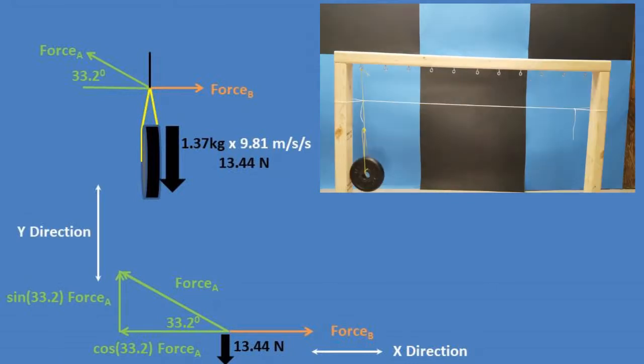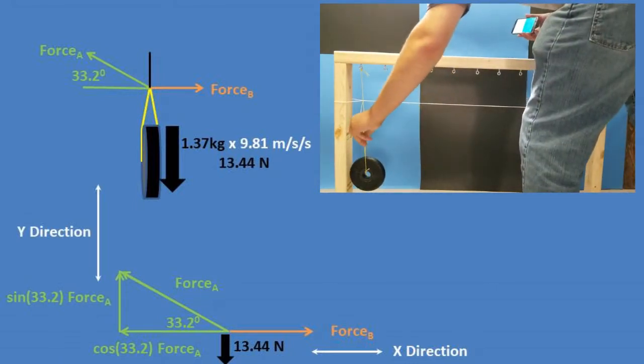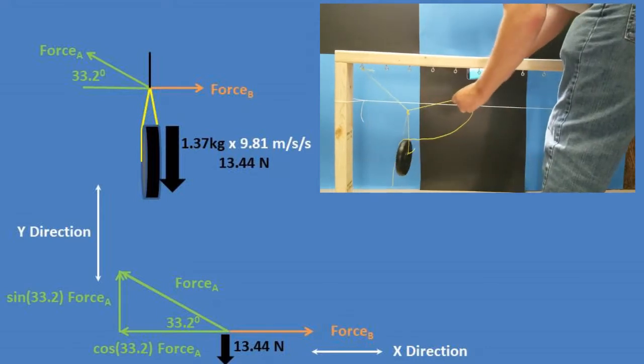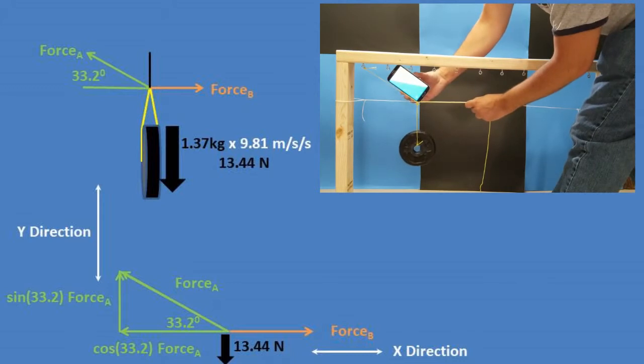Now, we will once again use trigonometry to solve for the vector in the y or down-to-up direction. We get that the sine of 33.2 degrees times the tension force of A equals the force in the y direction.